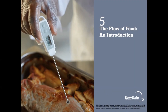Chapter five is the start of the really important part of sanitation: the flow of food — how we monitor the food from the time it comes into our facility to the time it reaches the diner's plate. That's when we have the most control, especially over the two big parts of FAT TOM: temperature and time. Chapter five is a brief introduction to the flow of food from receiving to service.